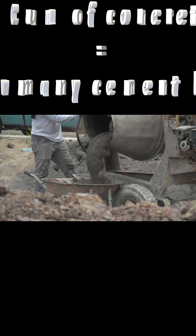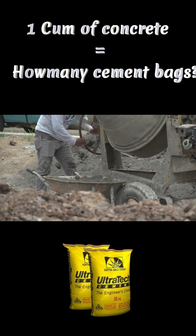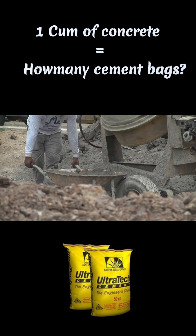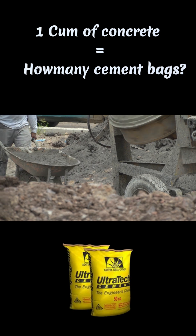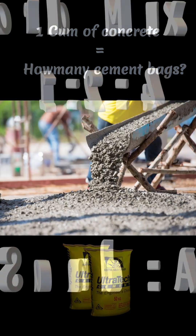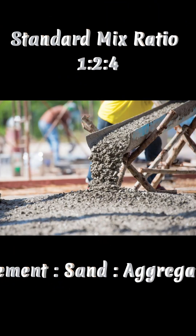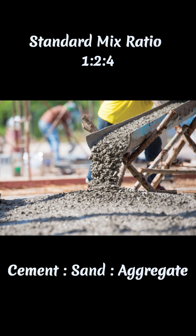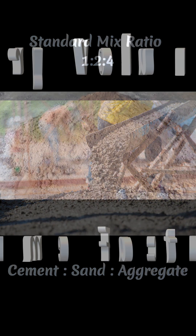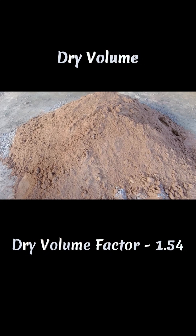Have you ever wondered how many cement bags are required for 1 meter cube of concrete? Let's break it down in 60 seconds. The standard mix ratio is 1:2:4 — one part of cement, two parts of sand, and four parts of aggregate.